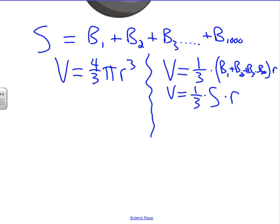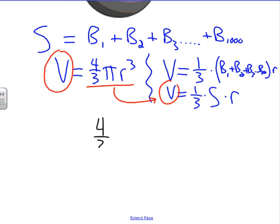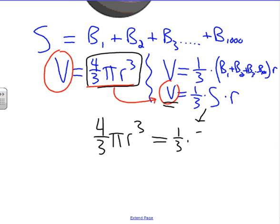Now if we take these two right here, I notice that there's a V there, so I'm going to take this and substitute that in place of it. I end up with 4/3 π r³ equals—remember I'm substituting this in place of this—S, and then this goes right here: 1/3 times the surface area times the radius.